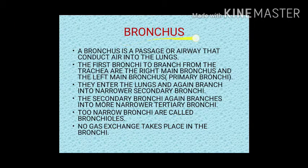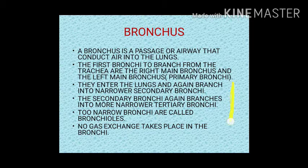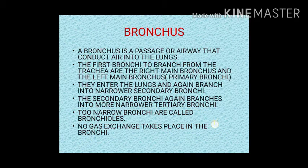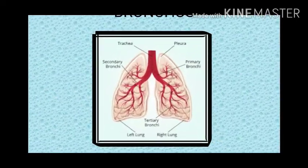A bronchus is a passage or airway that conducts air into the lungs. The first bronchi to branch from the trachea are the right main bronchus and the left main bronchus, also known as primary bronchi. They enter the lungs and branch into narrower secondary bronchi, which again branch into tertiary bronchi. The very narrow bronchi are called bronchioles. No gas exchange takes place in the bronchi. This diagram shows the primary, secondary, and tertiary bronchi along with the left and right lungs.